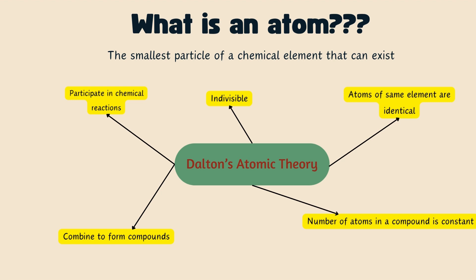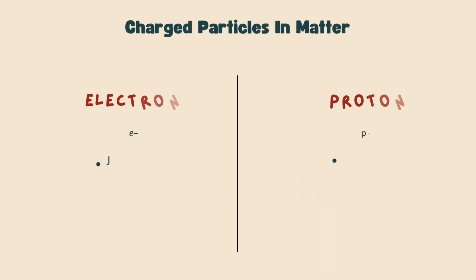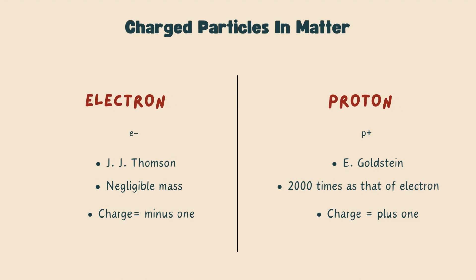But later on, after various experiments, it was proved that atoms are not indivisible and it consists of charged particles. They were electrons and protons. Electrons were discovered by J.J. Thomson in the year 1900 and represented as e-. Proton was discovered by E. Goldstein in 1886. The proton has charge equal in magnitude to that of electron but opposite in sign. The charge of electron is minus 1 and that of proton is plus 1. The mass of an electron is negligible while proton's mass is 2000 times that of electron. An atom is composed of proton and electron mutually balancing their charges.